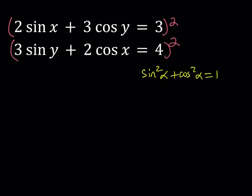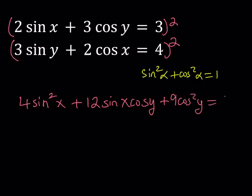So, once I square the first one, I should be getting something like 4 sine squared x plus 12 sine x cosine y, whoops, we forgot the last term, which is 9 cosine squared y. And that should equal 9.